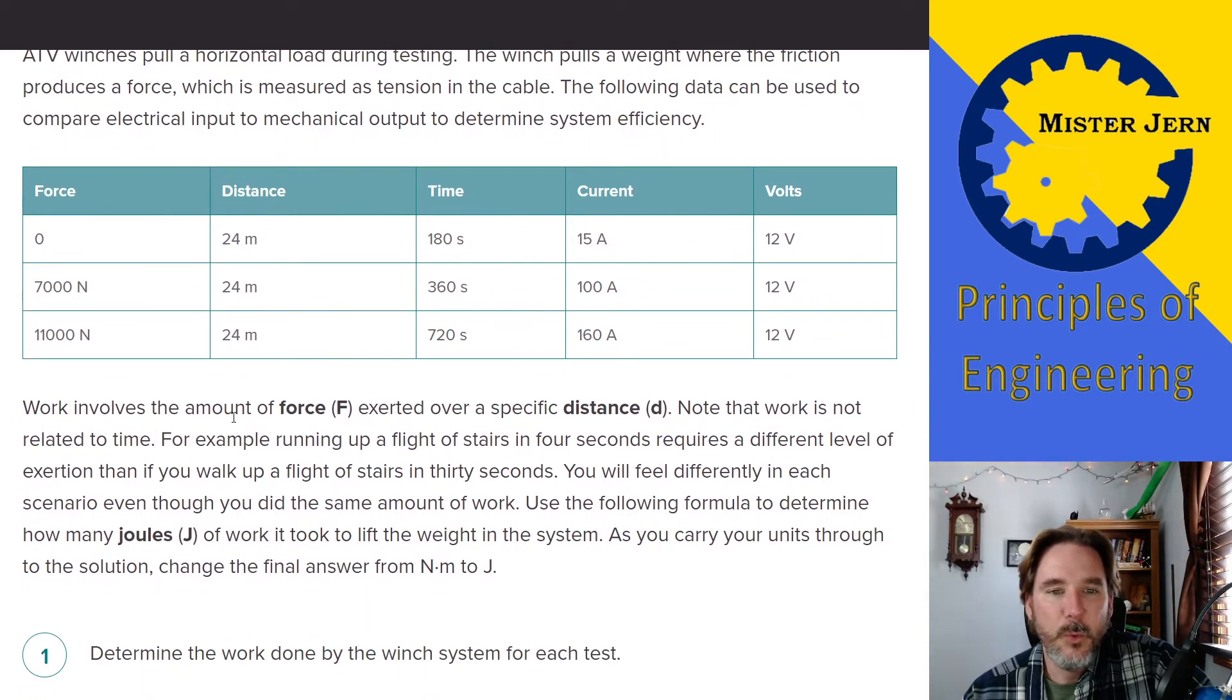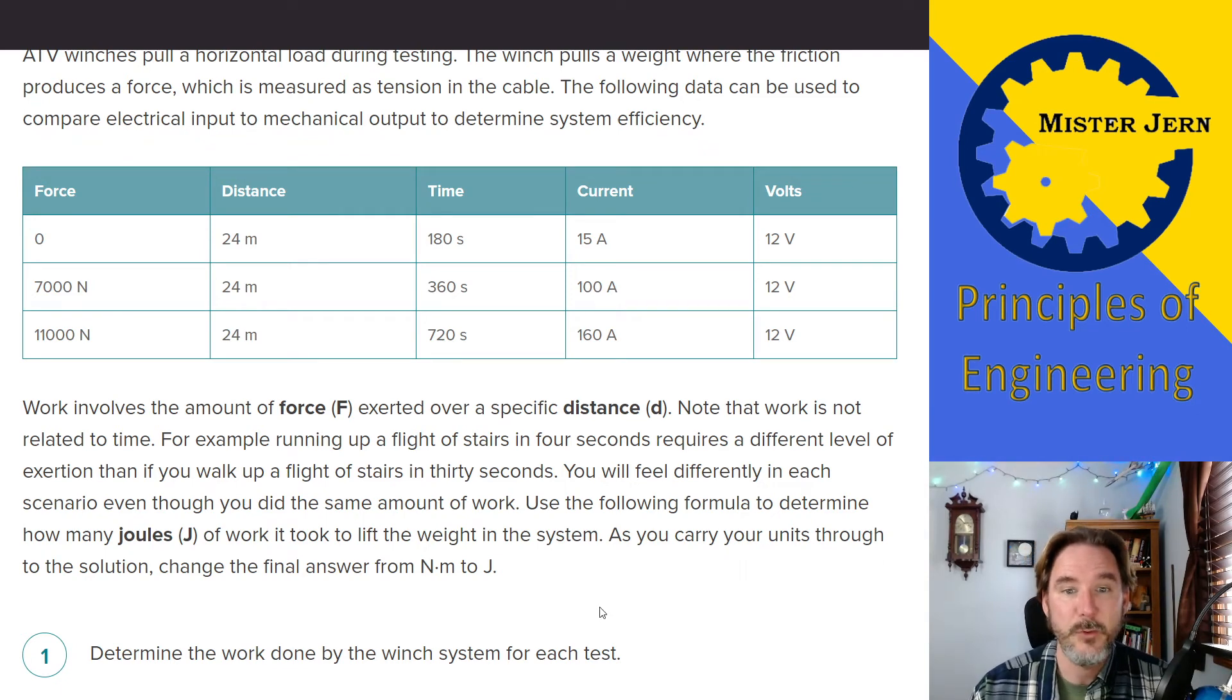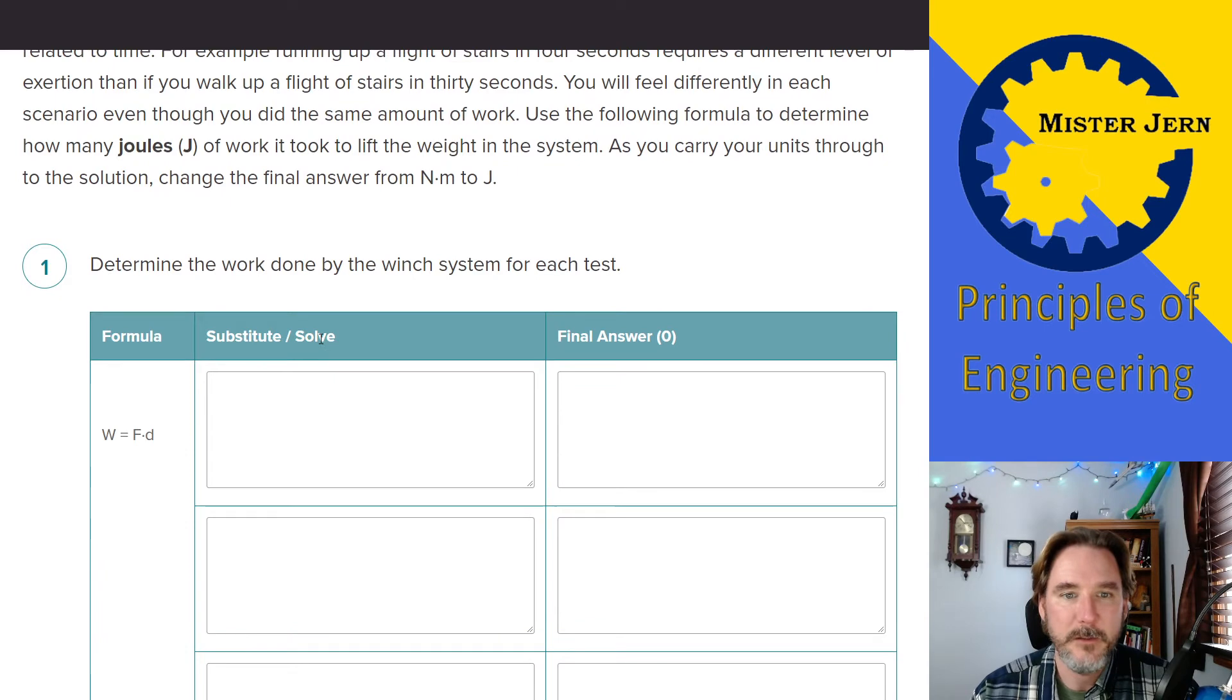Here's a little bit of reminder about work. It's going to be the force times the distance, and it's not always related to time. For example, running up a flight of stairs in four seconds requires a different level of exertion than if you were to walk up the same flight of stairs in 30 seconds. You're going to feel different, but you actually did the same amount of work. The thing is you did that work in a different amount of time. And so that difference that you're feeling is referring to the amount of power.